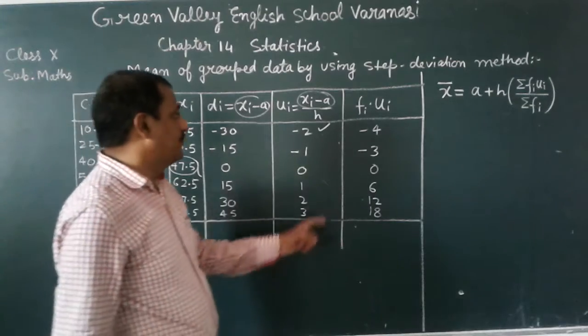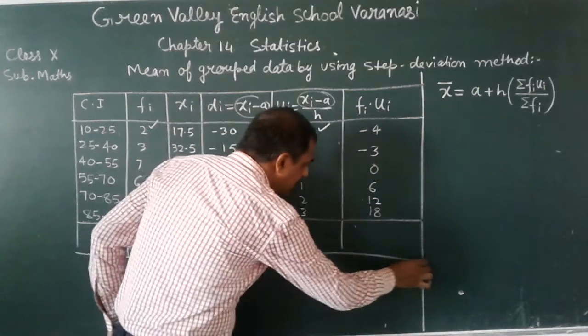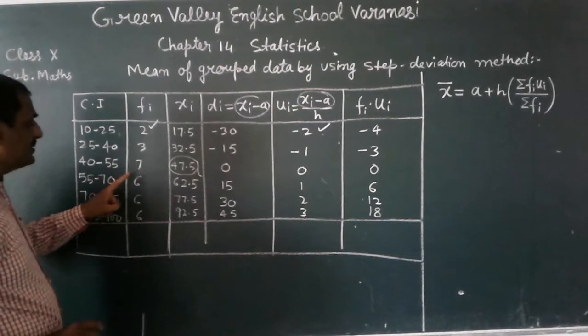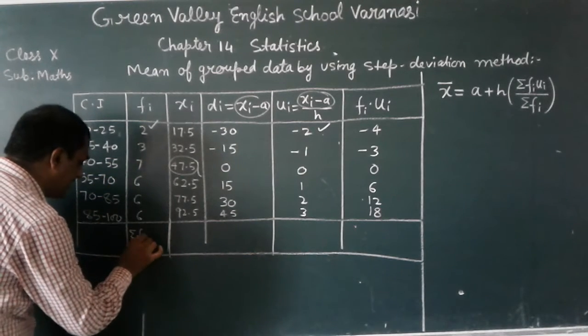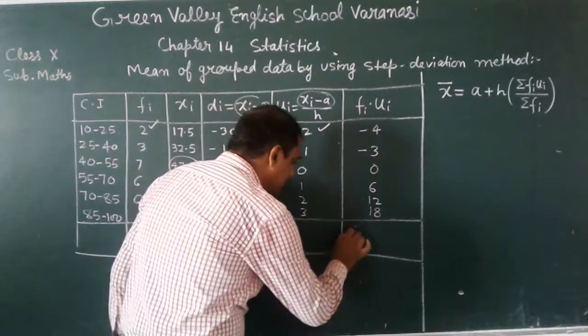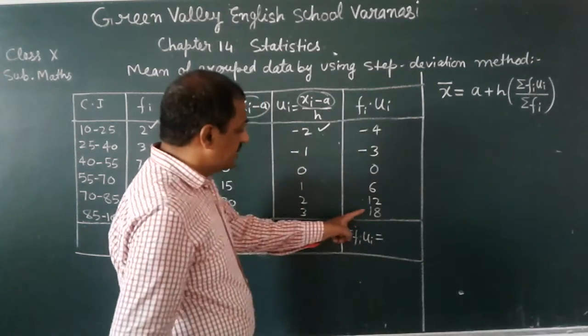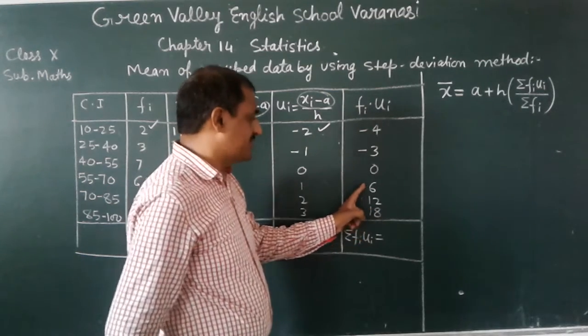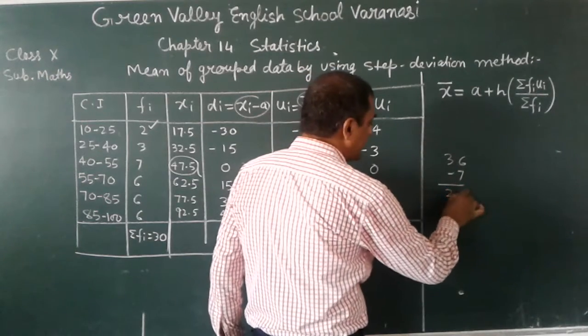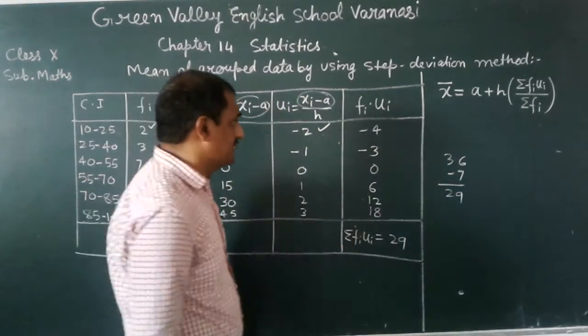Now I am going to find the sum, sum of frequency, the total frequency. Here the frequency is 2 plus 3 is 5, 5 plus 7 is 12, 12 plus 6 is 18, 18 plus 6 is 24, 24 plus 6 is 30. Here this is the summation of fi equal to 30. Now in the next column, I am going to find the summation of fi ui. Minus 4 minus 3 is minus 7. It will become 29. Here 29 is the sum of all these elements.